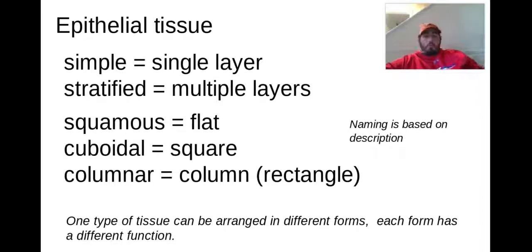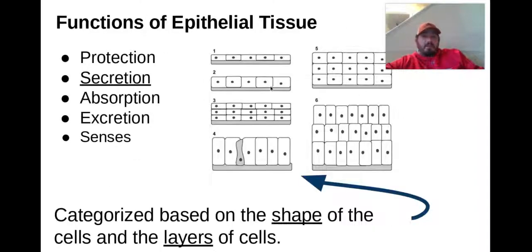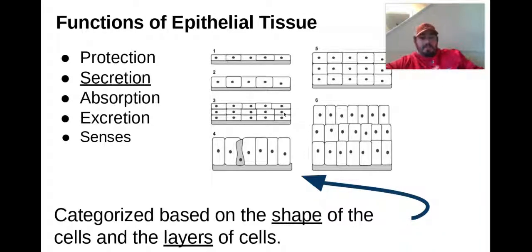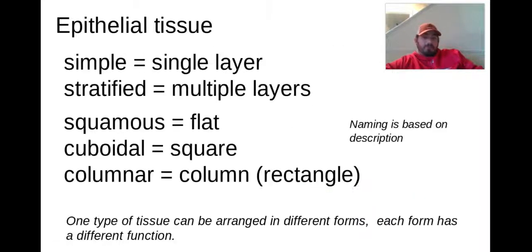One type of tissue can be arranged in different forms, and each form has a different function. The different epithelial tissue in your body is based on these shapes and layers for whatever job it has to accomplish. That's how we do the basic naming of the layers and shapes.